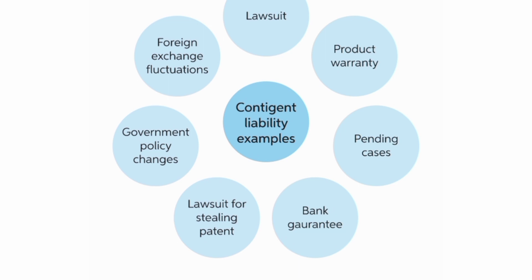Next, we have contingent liabilities. A contingent liability is a potential liability that may arise in the future depending on the outcome of certain events. Examples of contingent liabilities include pending legal cases, bank guarantees, and government policy changes.